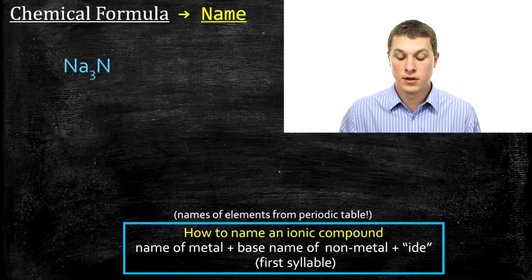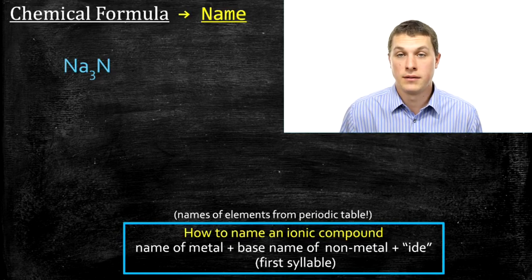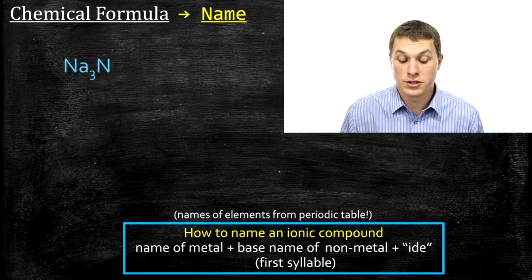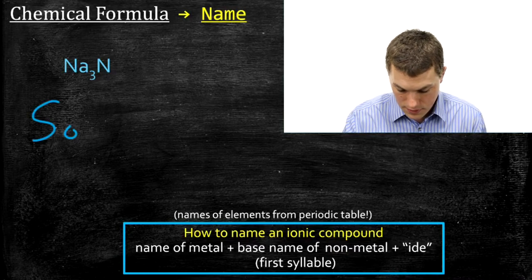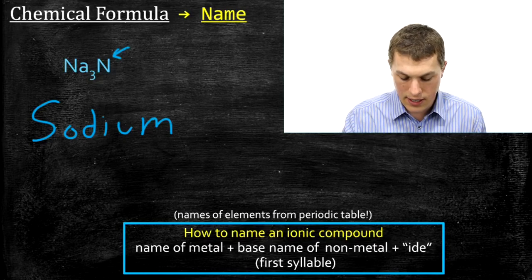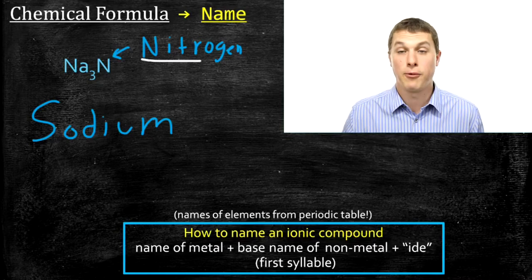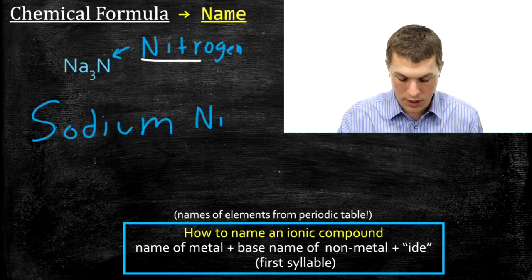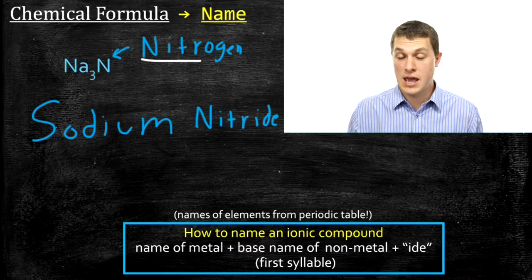Let's look at Na3N. That three means there are three sodium atoms in the compound, but that doesn't change how we write the name. When going from chemical formulas to names, we don't have to worry about the numbers. We look up Na — sodium — and we look up N on the periodic table, which is nitrogen. We keep the base name of nitrogen, which is just N-I-T-R, and add 'ide' at the end. So Na3N becomes sodium nitride.